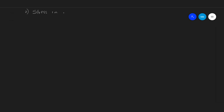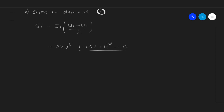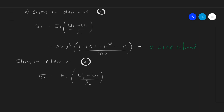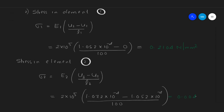Now let's find the stresses in each element. For element 1: sigma1 = Young's modulus × strain = E × (U2 - U1) / L1. Substituting U2 = 1.052 × 10⁻⁴ and U1 = 0, this yields 0.2104 N/mm². For element 2: sigma2 = E2 × (U3 - U2) / L2. Substituting U3 = 1.072 × 10⁻⁴ and U2 = 1.052 × 10⁻⁴, the stress in element 2 is 0.004 N/mm².